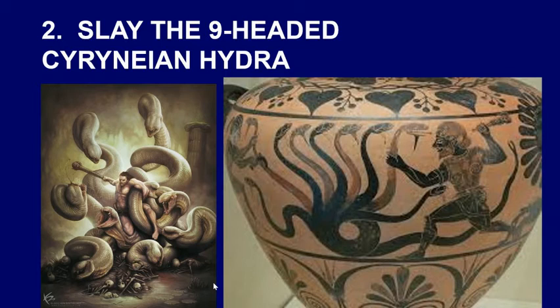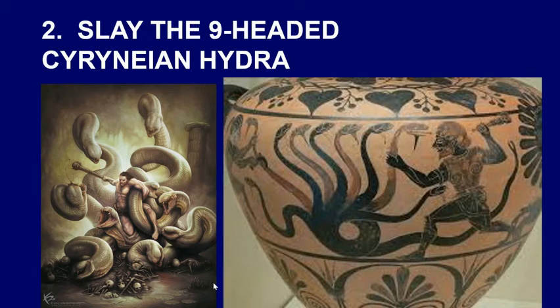The second labor of Heracles is to kill the nine-headed Lernean Hydra. The problem is that every time you cut off a head, two more grow in its place — which makes it impossible to kill. So he gets the help of a friend, and every time he cuts off a head, his friend cauterizes the wound, preventing the heads from growing back. That's how Heracles is able to kill the hydra.